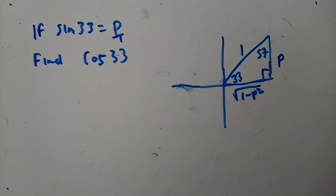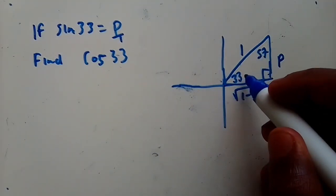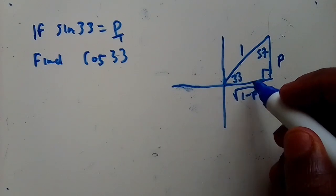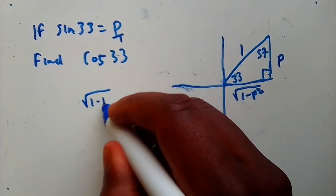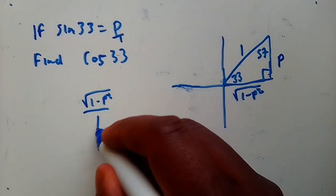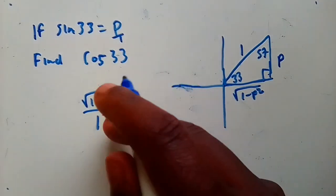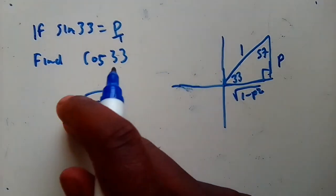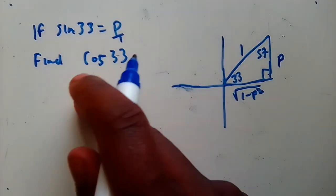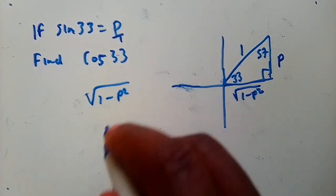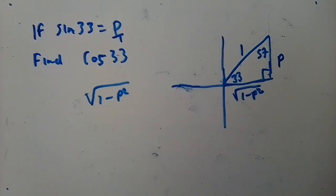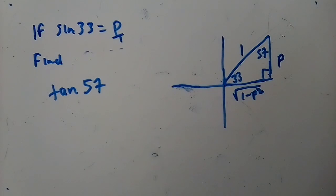So cos 33° is adjacent over hypotenuse, which is √(1 - p²) over 1. The answer is simply √(1 - p²). You can pause the video and try out this question.